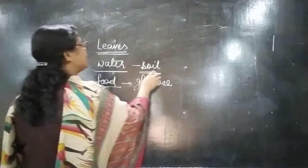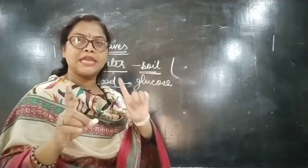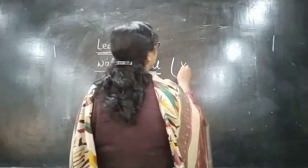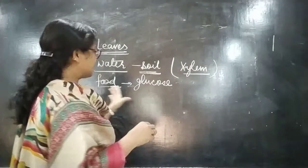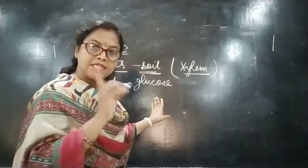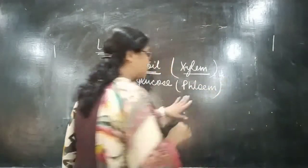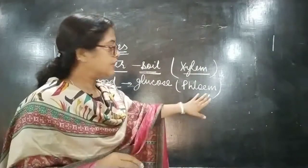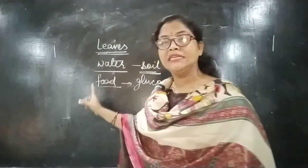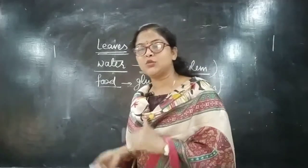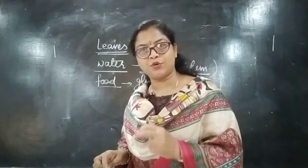For the transportation of water and minerals, there is a tissue called xylem. It is a complex tissue because it is made up of four types of cells. Similarly, transportation of food is done by another tissue called phloem, which is also a complex tissue made up of four types of cells. These two tissues are involved in the process of transportation in plants.